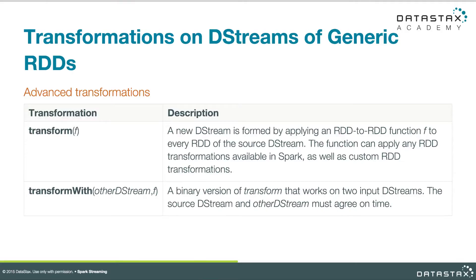Spark streaming gives us a new and slightly lower-level API called transform. Transform is a method we call on a stream, and we pass it a function. That function gets passed a parameter which is an RDD — every batch in a D-Stream will get passed to this transform function, where we'll be able to operate on that RDD with the full RDD API at our disposal. Anything we want to do, we can do inside that transform function. TransformWith does the same thing, except we'll also be able to pass in another RDD — it's basically the binary transform version of transform.